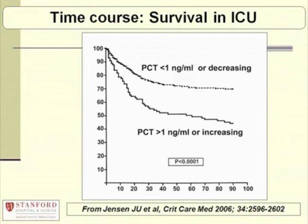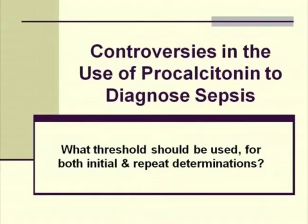At the current time, we're not really sure how frequently PCT should be ordered. A rule of thumb worth following is at least once a day during the first week of ICU stay. The third question is: what cutoffs should be used? This is a really important question — it defines whether the PCT is elevated or not. Perhaps we should have different cutoffs for the initial PCT and different cutoffs for repeat determinations.